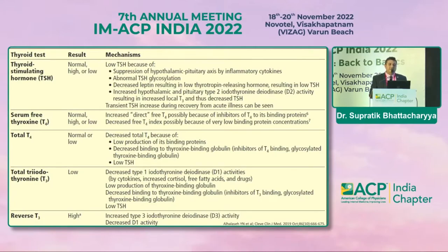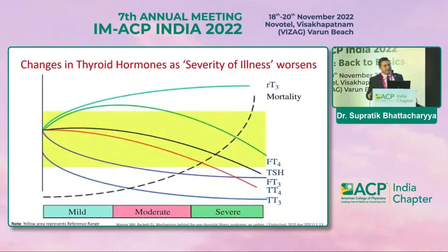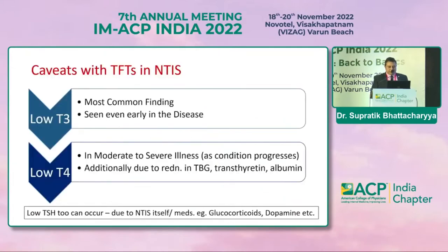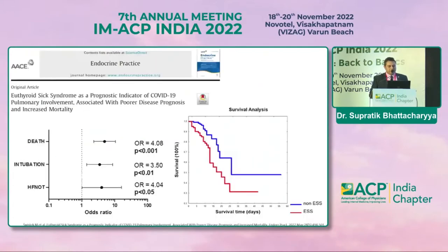Reverse T3 is high because of increased D3 activity. As illness becomes more severe, there is a drop in free T3 and an increase in reverse T3. Regarding caveats with TFT in non-thyroidal illness: low T3 is the most common finding, seen even early in the disease. Low T4 occurs in moderate to severe illness, additionally due to reduced thyroid binding globulin, transthyretin, and albumin.